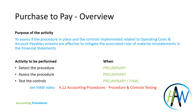Hi, in this video of the accounting procedure section, I am pleased to show you how to assess the purchase-to-pay process. The purpose of the activity is to assess if the procedure in place and the controls implemented related to operating cost and accounts payable stream are effective to mitigate the associated risk of material misstatement in the financial statement.